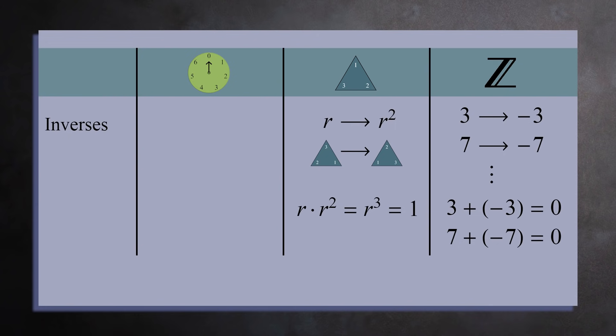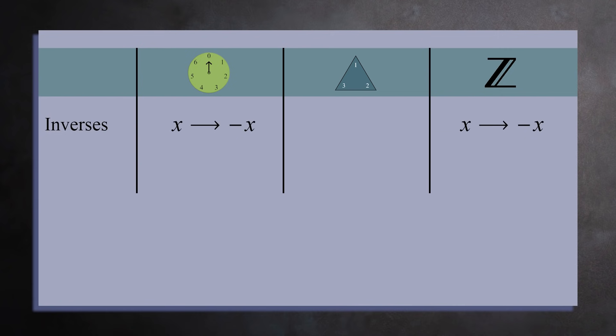For the integers mod 7, the inverse of 3 is negative 3. But negative 3 is just 4 on the clock, so we say the inverse of 3 is 4. And 3 plus 4 equals 0, the identity element. So for all three examples, each element x has an inverse. If you're using the plus sign for your operation, the inverse is written as negative x. And if you're using the multiplication sign for your operation, the inverse is written as x to the negative 1. Combining x with its inverse gives you the identity element.